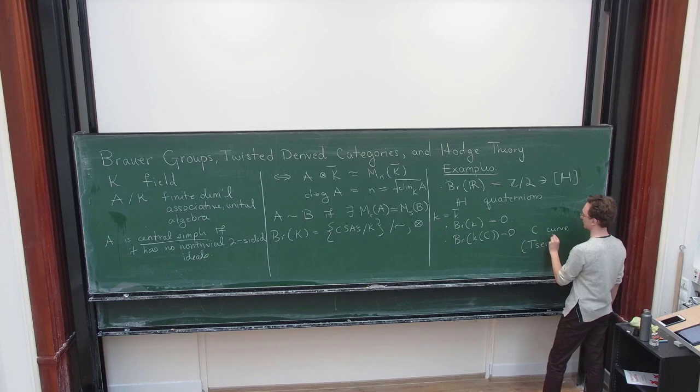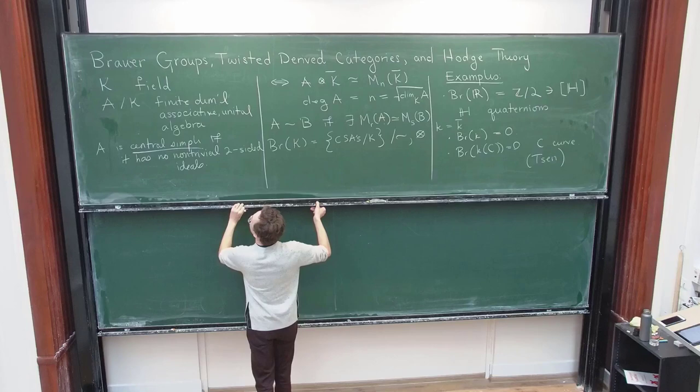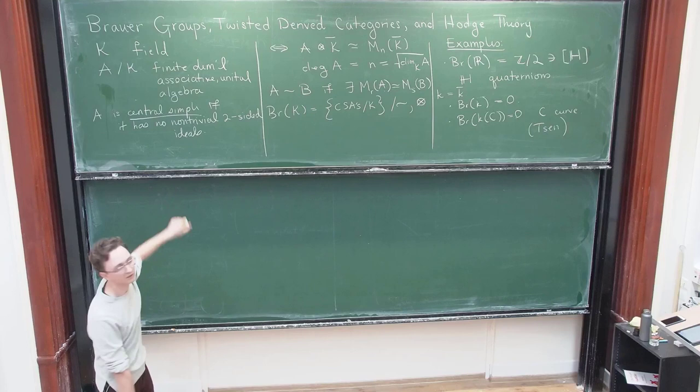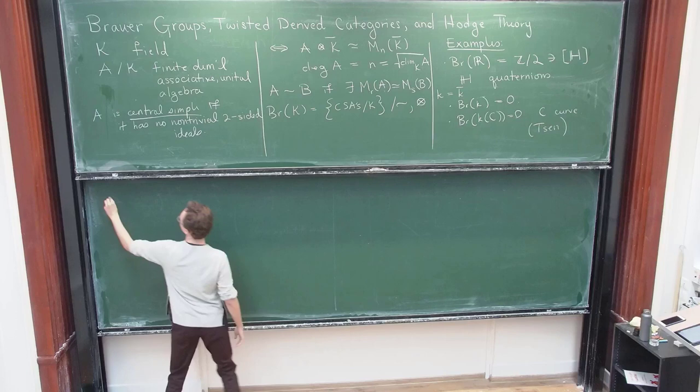This is also trivial, right? This is by, basically by Tsen's theorem. So, so in your definition, the complex numbers over R are central. And they're not central. I forgot to say central, but this center should also be K. I didn't write it.